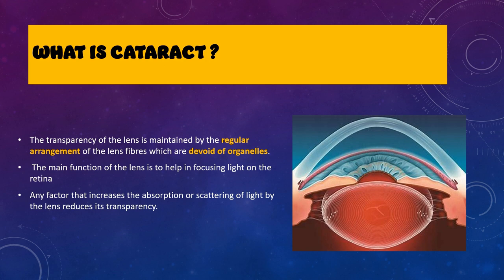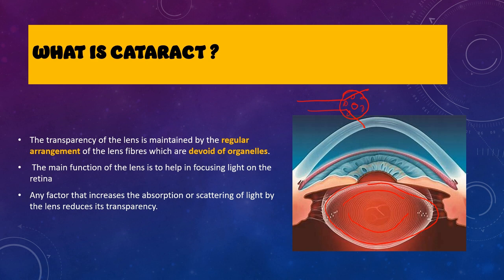So what is meant by cataract? Basically we know that the lens is a transparent structure present inside the eye which has an important refractive value. It basically allows the light to pass through it and then focus on the retina. The lens is quite clear and transparent because of the regular arrangement of the fibers, as explained in the anatomy of the lens. Apart from that, the lens fibers do not have any organelles.